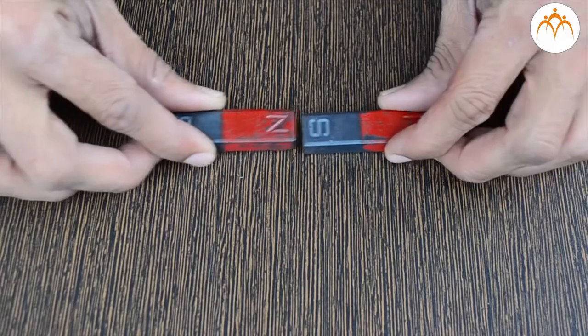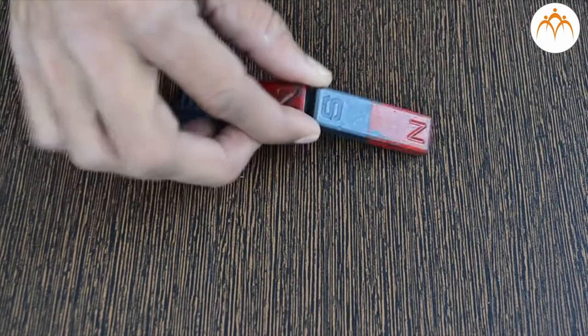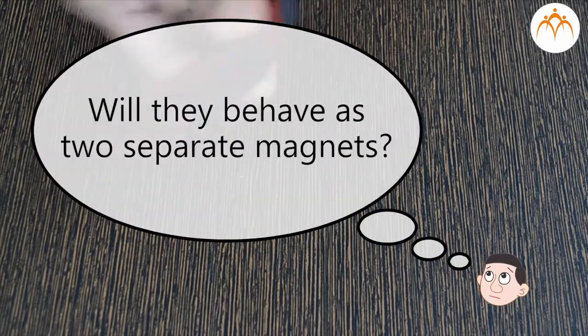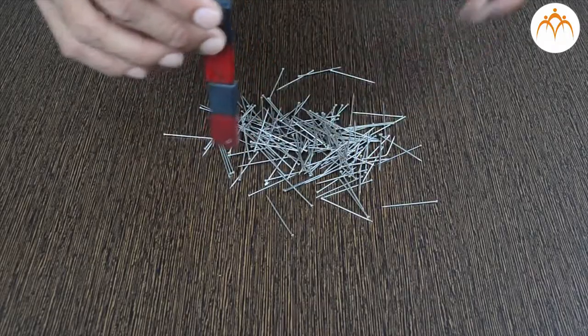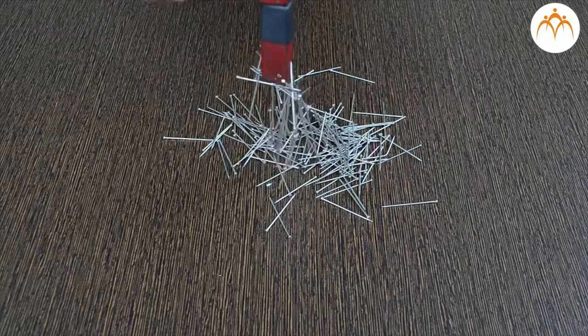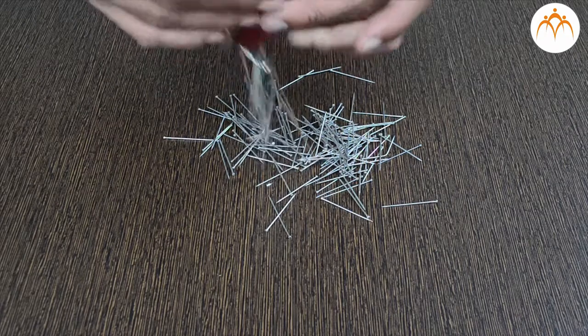Now, what will happen if you join these two magnets? Will they behave as separate magnets now? Let us place two bar magnets next to each other. We can see that these behave as one single magnet.